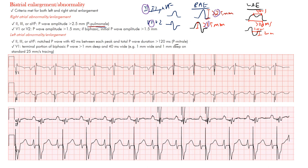Looking at our first example: in V1, the terminal portion is clearly at least one millimeter deep and one millimeter wide. In the second tracing, V1 is quite deep and wide enough. You can also see that the P waves are somewhat wide with some notching — not a perfect M-shape, but wide enough. In both cases, left atrial enlargement was present.